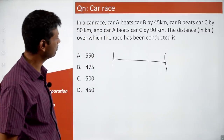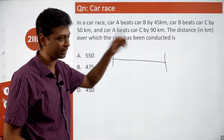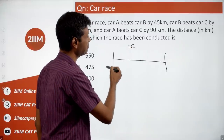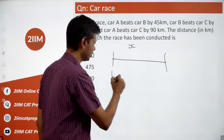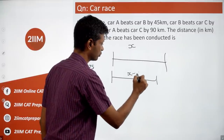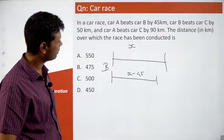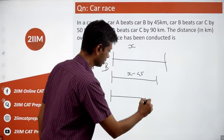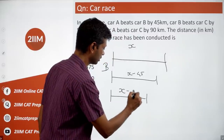A beats B by 45 and A beats C by 90. Let's assume the distance is x. A beats B by 45 means when A completes the race, B has done only x minus 45. A beats C by 90 kilometers means when A completes the race, C has done only x minus 90.